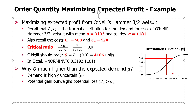Strictly speaking the result will be fractional, but we round up since that achieves a slightly higher probability of satisfying demand. The question remains: why is this Q value of 4,186 so much higher than the expected demand of 3,192, and even much higher than the marketing forecast of 3,200?